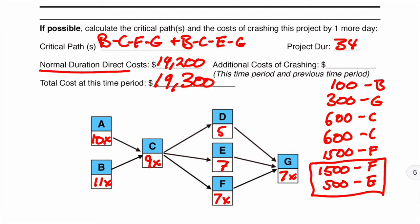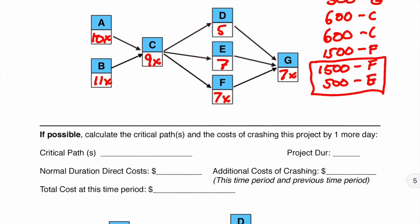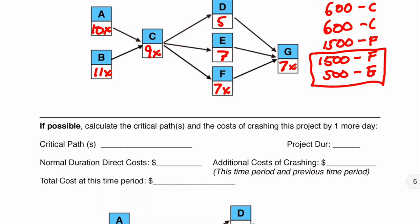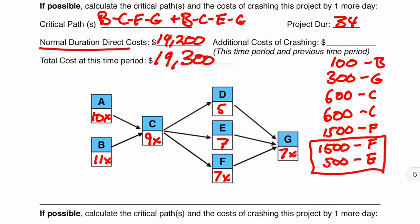Now, it asks us, if possible, calculate the critical path and cost of crashing by one day more. Can we crash it one day more? No, we can't. Because the fact is that if you look at this path here, everything has been crashed to its maximum. So while we could crash E another one, that doesn't help us at all. So we are now stuck. If we were to move this down to 6, you would do the calculation. You'd find we're still at 34. So that doesn't help us at all. We're kind of going to stay there. We can't move any farther.